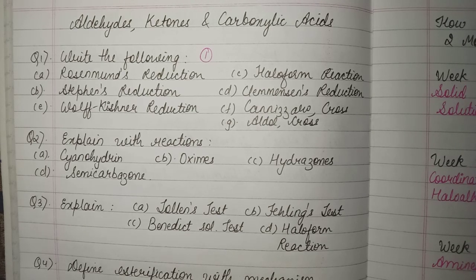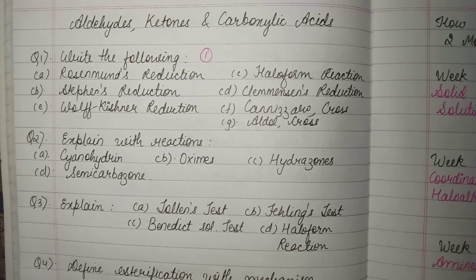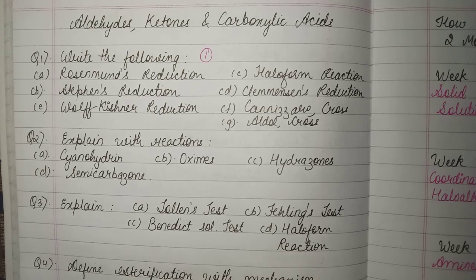First of all, the name reactions — as I have already told you, all the name reactions of organic chemistry are very important. For Aldehydes, Ketones, and Carboxylic Acids, there are many name reactions. The most important, which I have written in the first question, are Aldol and Cross-Aldol Condensation reaction, and Cannizaro and Cross-Cannizaro reactions. These are the most important, but all other name reactions are important too.